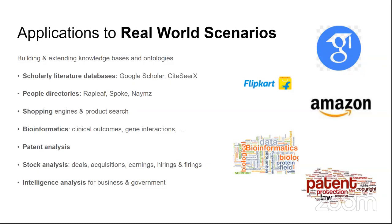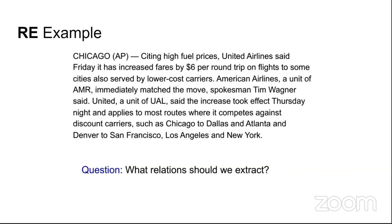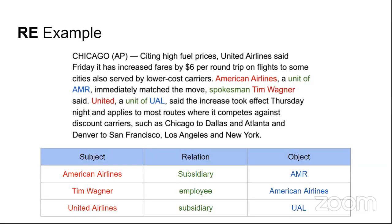There are quite a few real-world scenarios where relationship extraction is applied. Consider this news cutting where the Associated Press reports a fare hike by United Airlines. The most common relationship extraction triple is subject–relationship–object. From this text you can extract: American Airlines is a subsidiary of AMR, Tim Wagner is an employee of American Airlines, and United Airlines is a subsidiary of UAL.